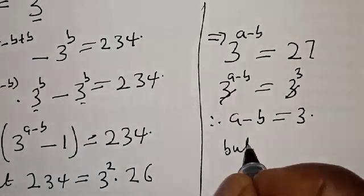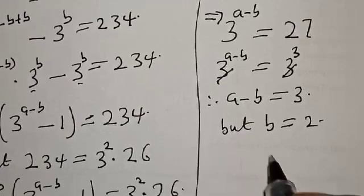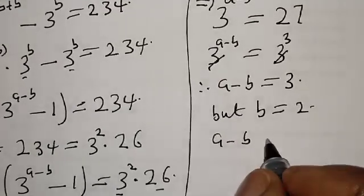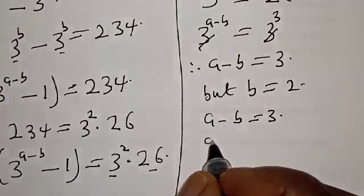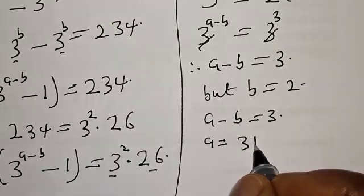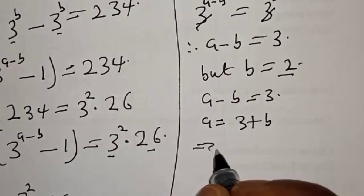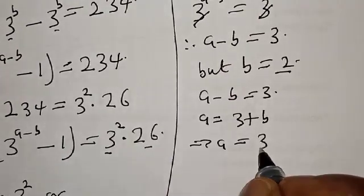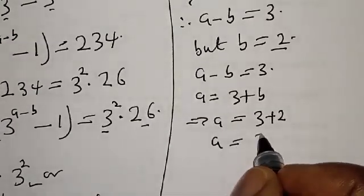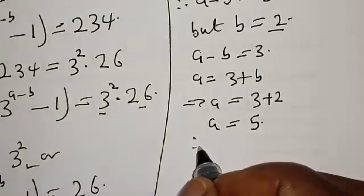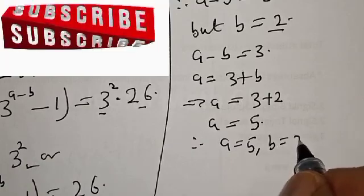So a minus b is equal to 3. This means a is equal to 3 plus b. Since our b is equal to 2, this implies that a is equal to 3 plus 2. Therefore our a is equal to 5. So a equals 5 and b equals 2.